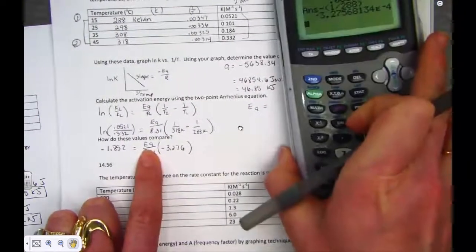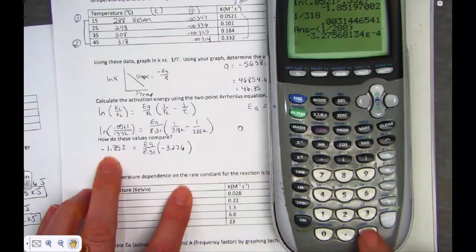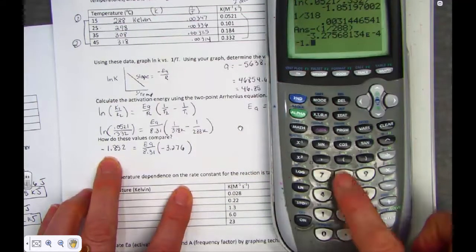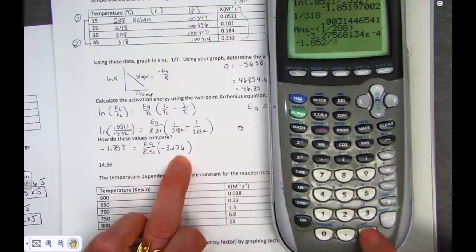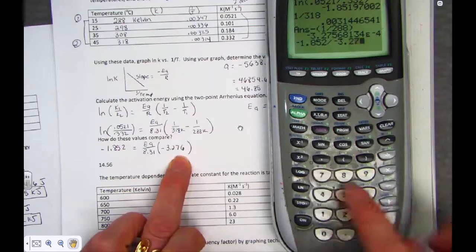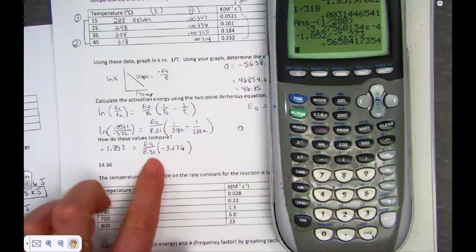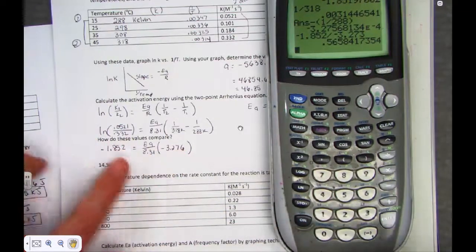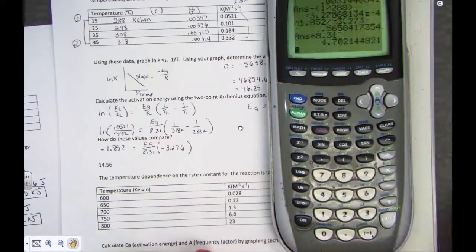Let's simplify what's in this parenthesis. 1 divided by 318 minus 1 divided by 288. And this value is negative 3.276. Still looking for Ea. So the algebra continues. I'll type in next on my calculator sequence, negative 1.852 divided by negative 3.276. And that's my value for what Ea over R is. To get rid of 8.31, multiply both sides by 8.31.